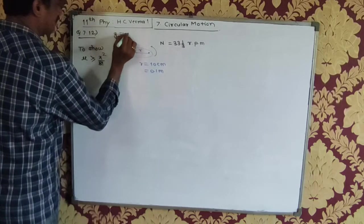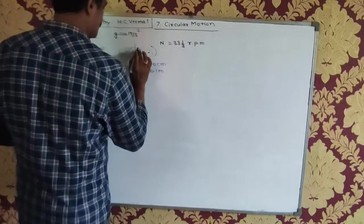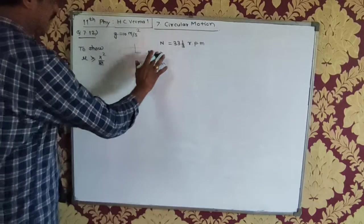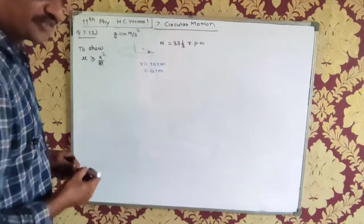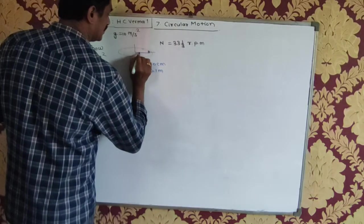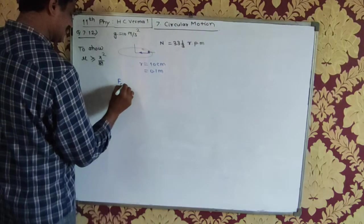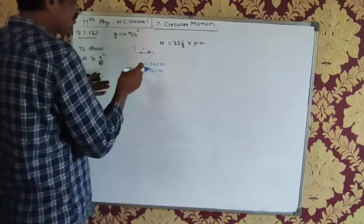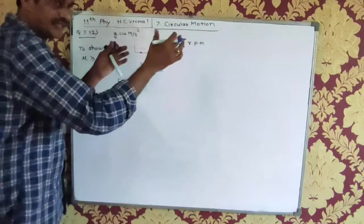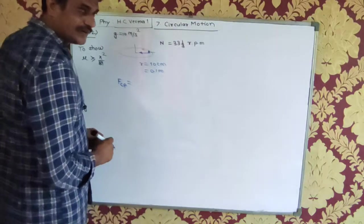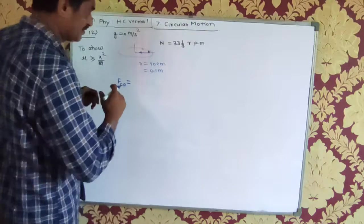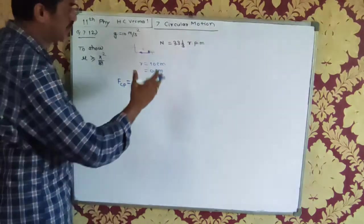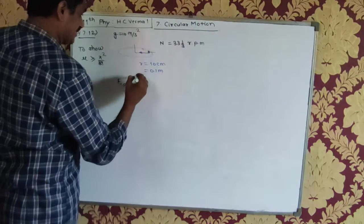Given that g is equal to 10 meters per second squared. When the mosquito is sitting on the disc, it is quite likely to be thrown away because of the centrifugal force. If it has to perform circular motion, there must be a frictional coefficient between the mosquito and the disc, and this frictional force provides the necessary centripetal force.